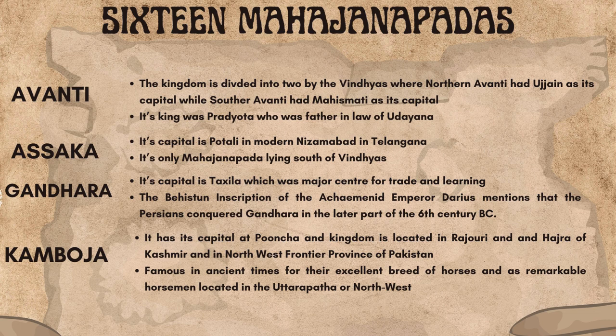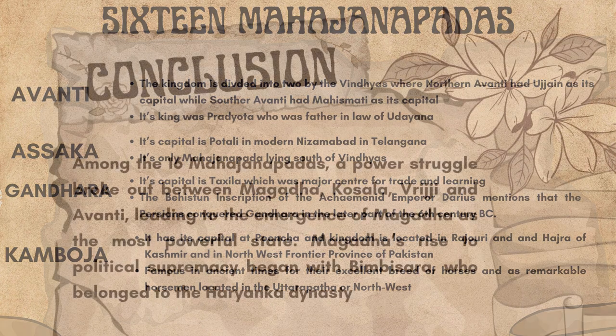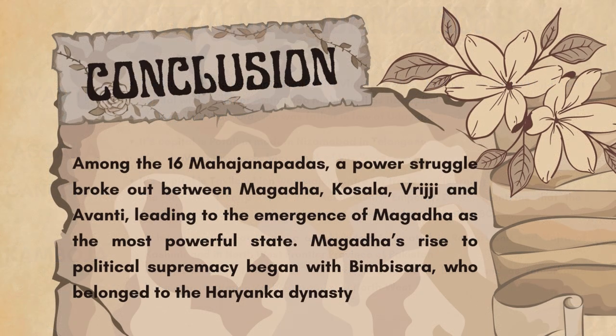Kamboja was famous in ancient times for their excellent breed of horses and as remarkable horsemen, located in the Uttarapatha or northwest. Among the 16 Mahajanapadas, a power struggle broke out between Magadha, Kosala, Vriji, and Avanti, leading to the emergence of Magadha as the most powerful state. Magadha's rise to political supremacy began with Bimbisara, who belonged to the Haryanka dynasty.